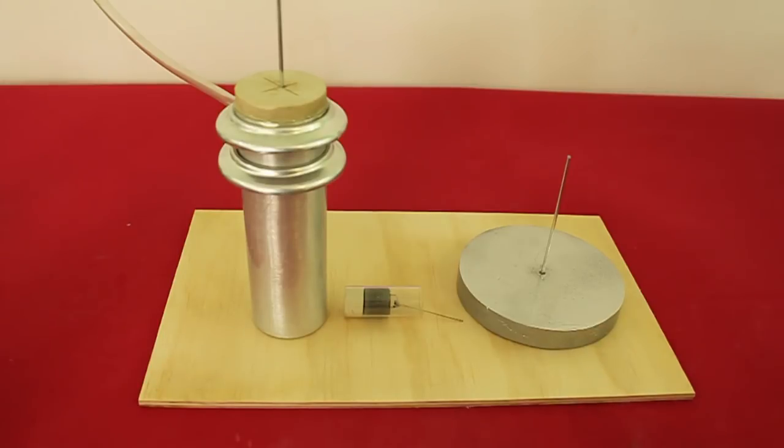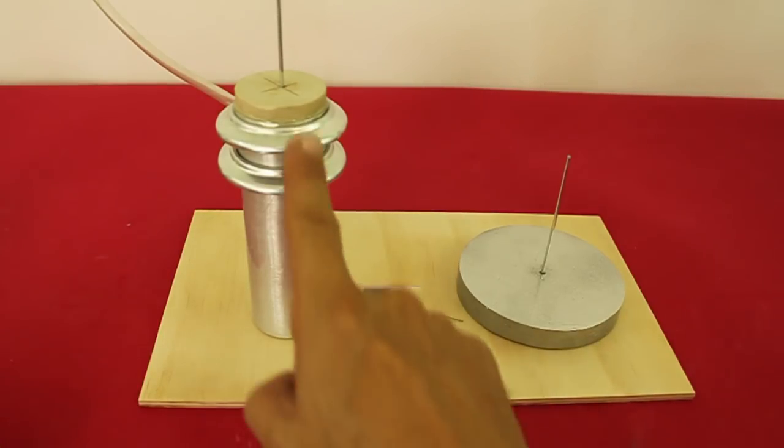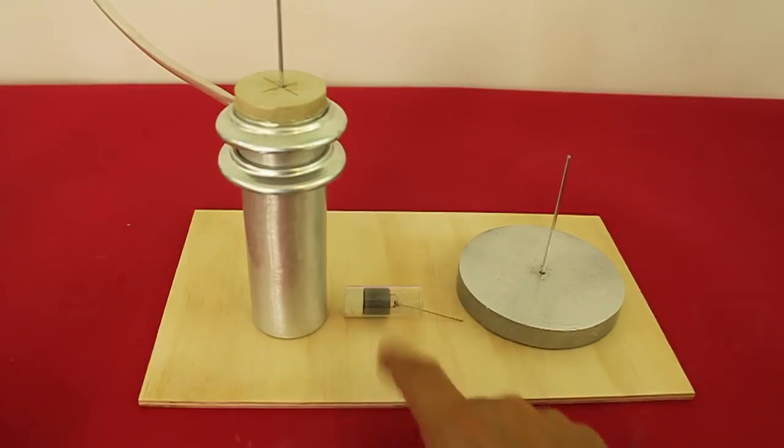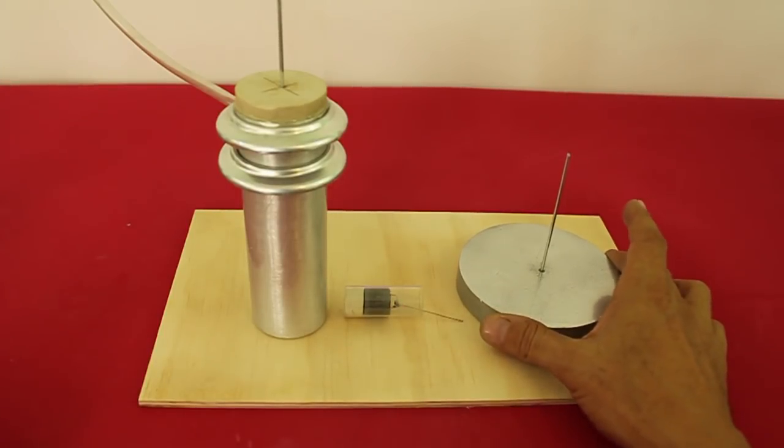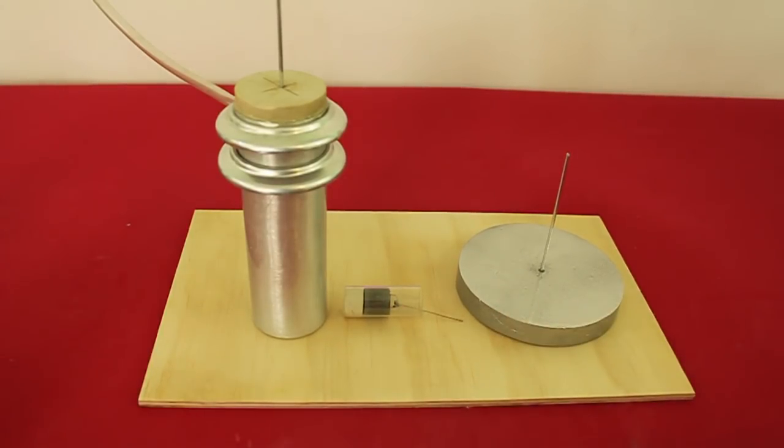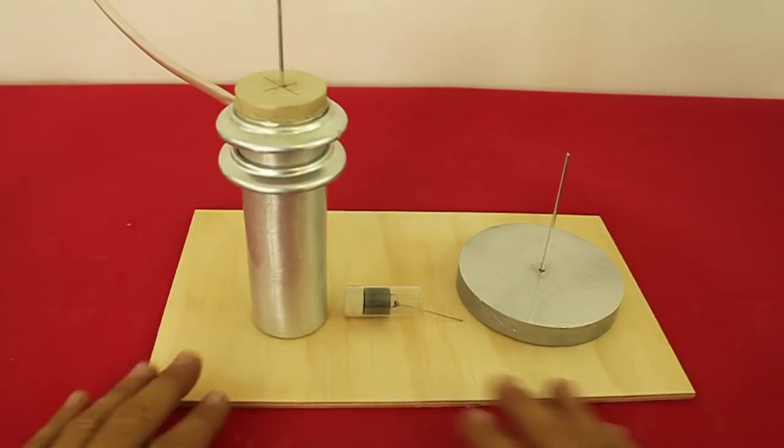We have the main components, the displacer cylinder, power piston and the flywheel. And now we have to assemble everything on a wooden base.